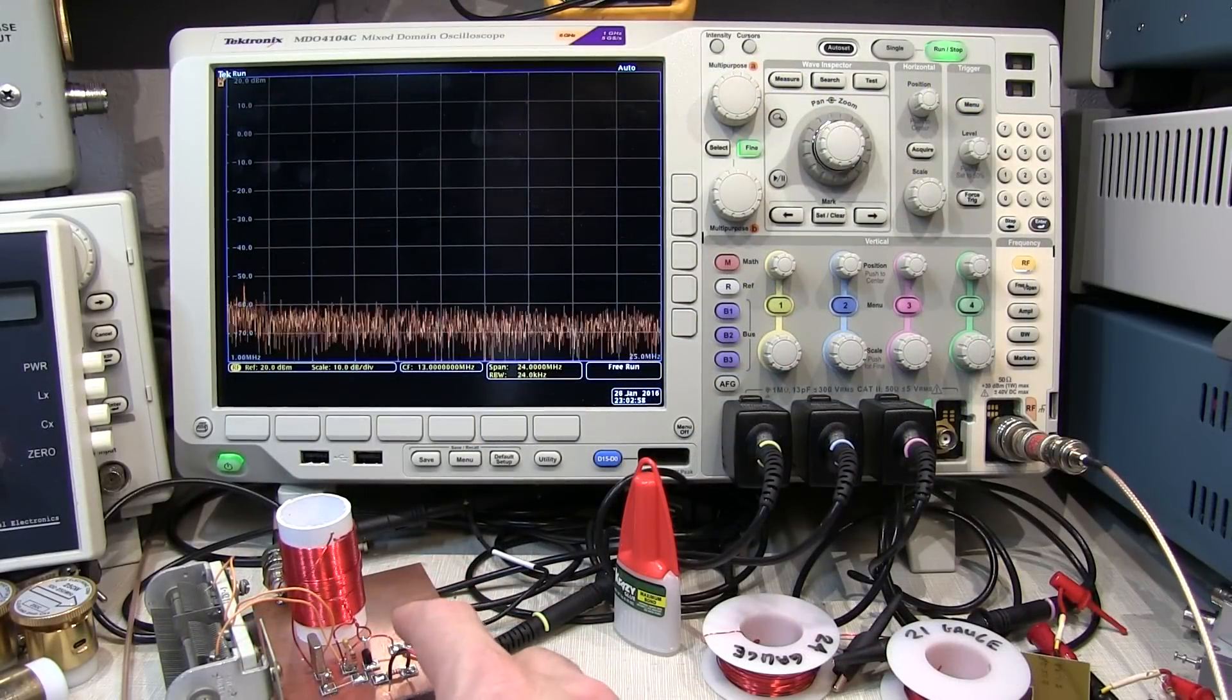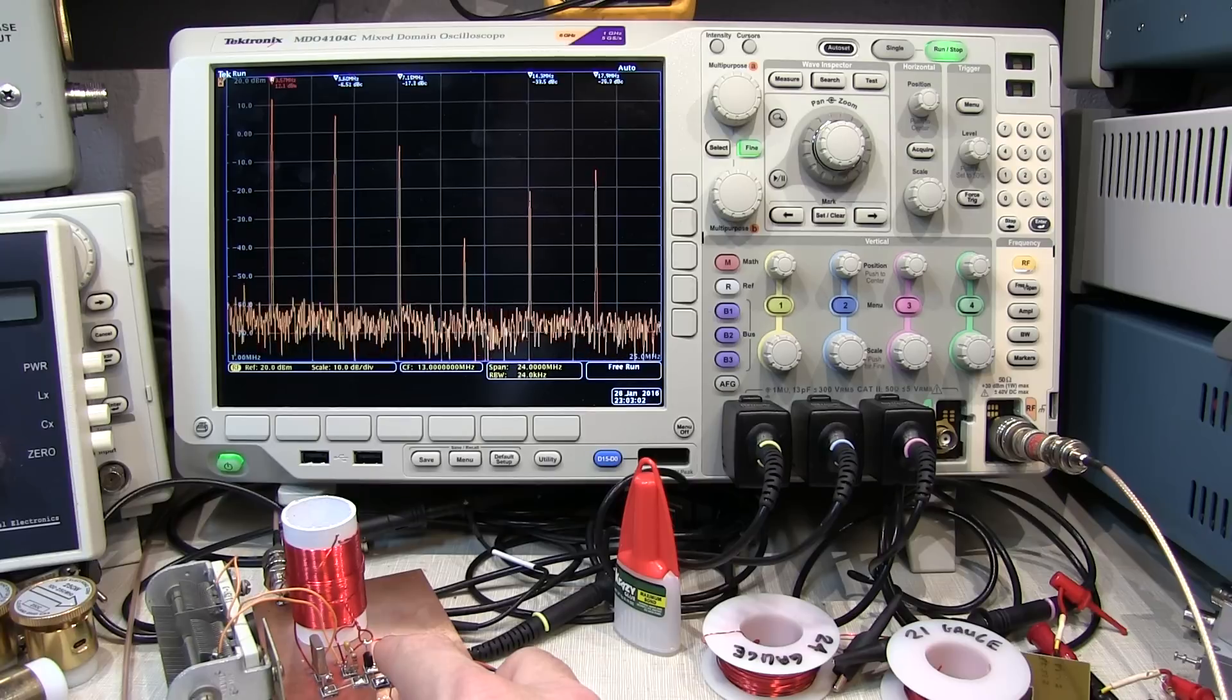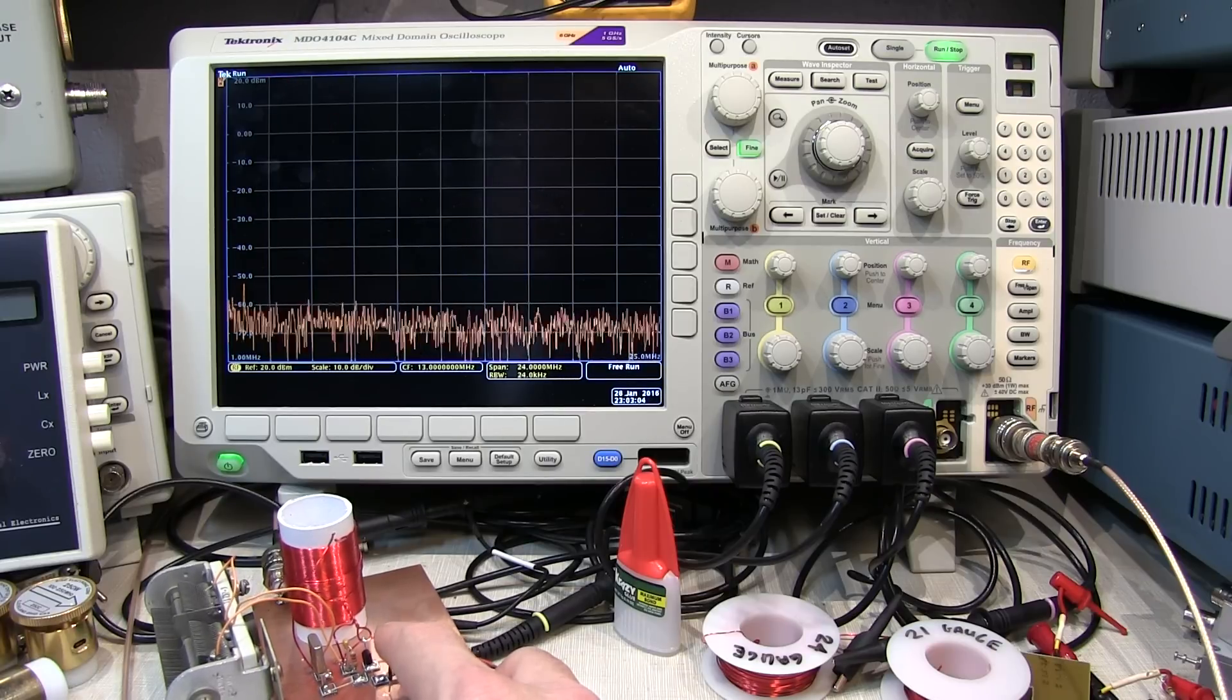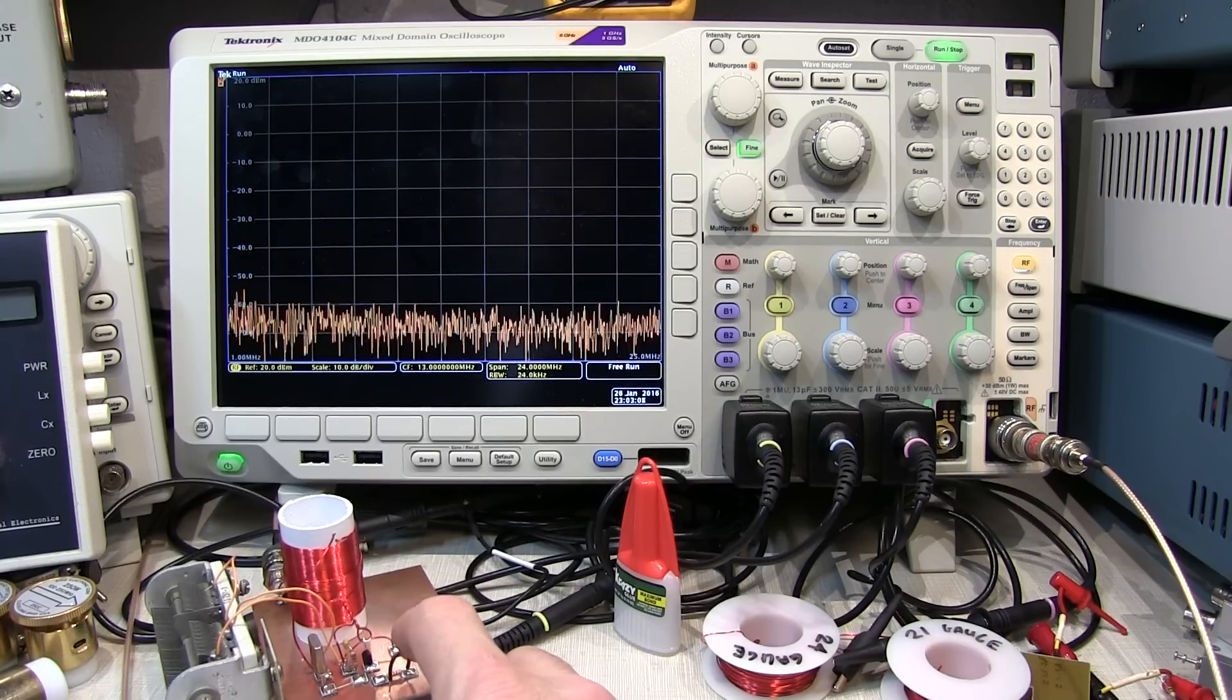All right, so let's remind ourselves how bad that looked before the filter. Yeah, it looks like that second harmonic is about 6.5 dB down, the third harmonic is showing about 17 dB down.